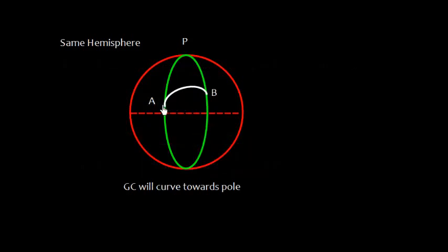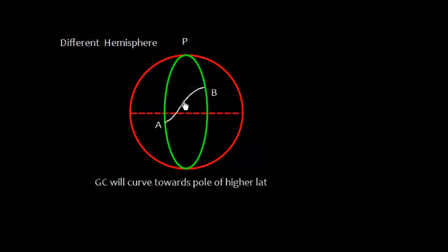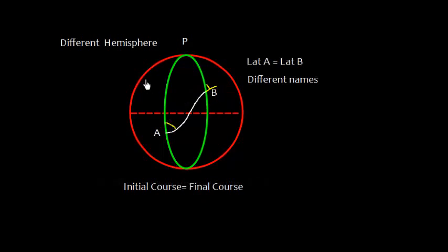If two points, say point A and point B, are both in the same hemisphere — for example the northern hemisphere — the great circle will curve towards the pole, curving towards the north pole. Similarly, if they are in different hemispheres, say point A is in the southern hemisphere and point B is in the northern hemisphere, the great circle will curve towards the pole of higher latitude. From A to the equator the curving will be towards the southern pole.